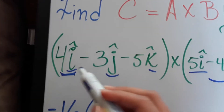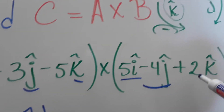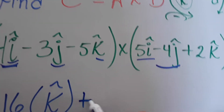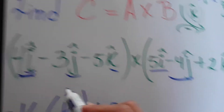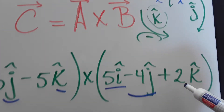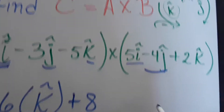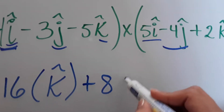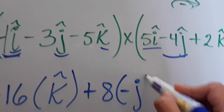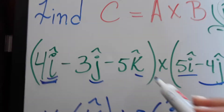Now we're going to have 4 times 2, that's plus 8. And i cross k — i cross k is negative j. That's the unit vector.